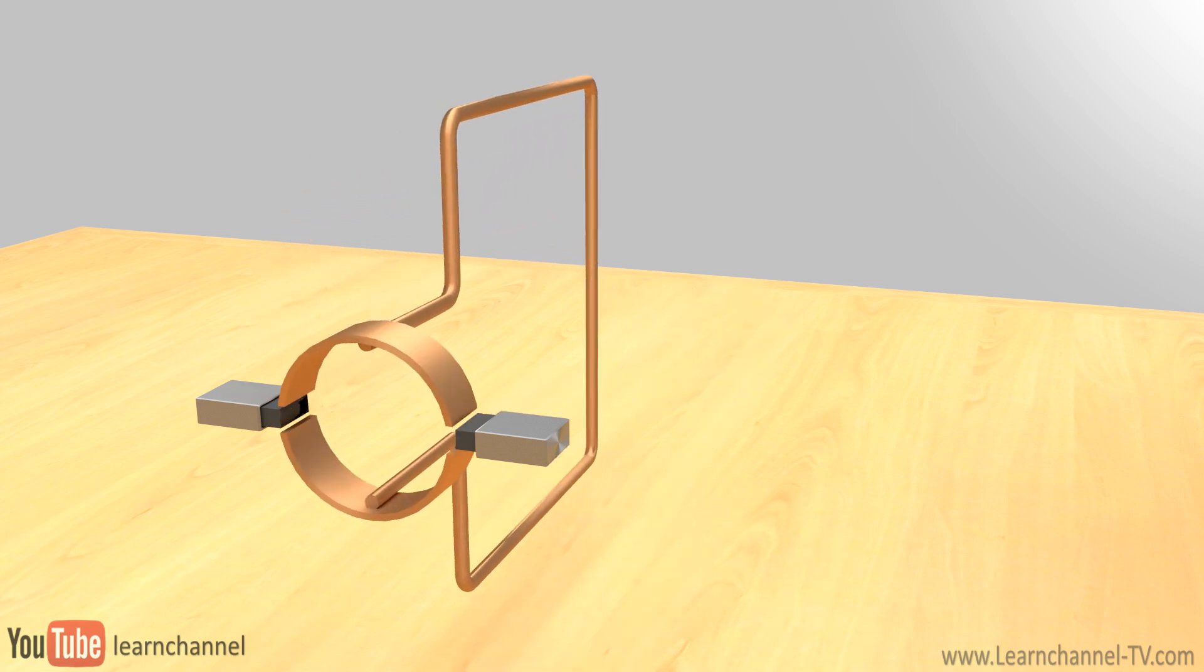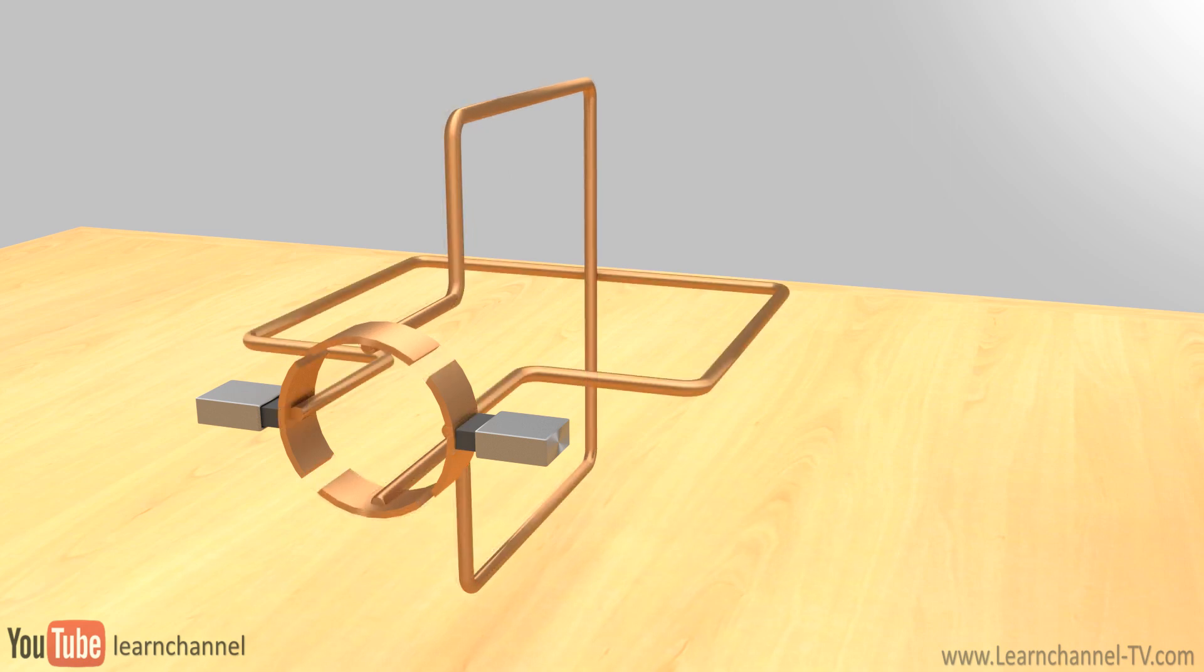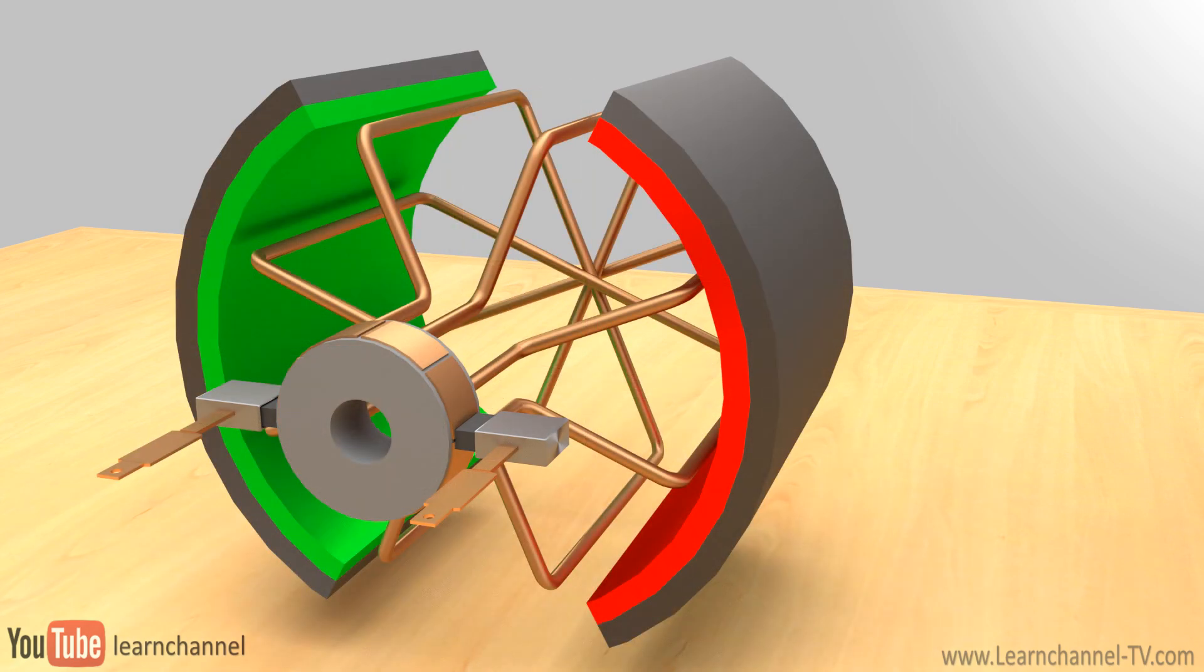To avoid this problem, we split the commutator ring and add another loop. Adding more loops to the armature ensures nearly constant torque and therefore continuous spinning.